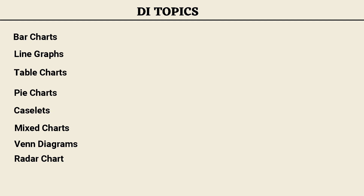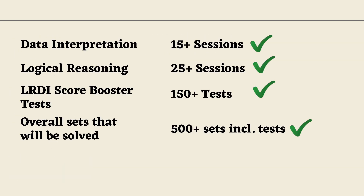Then comes the DI topics. First we will look into bar charts, line graphs, table graphs — all the typical DI topics — pie charts, caselets, mixed charts, Venn diagrams, and radar charts. Overall we will have 15-plus master sessions on DI and 25-plus sessions on LR. Besides these, we will also provide 150-plus score booster tests for LRDI, and overall we will solve 500-plus sets — including sets solved in sessions as well as those provided in the score booster tests.